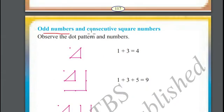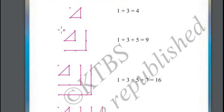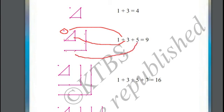Odd numbers and consecutive square numbers. In the first example, there are four dots: one dot, plus three dots. One plus three equals four. In the second example, one plus one, two, three - three dots, plus one, two, three, four, five - five dots. One plus three plus five equals nine.